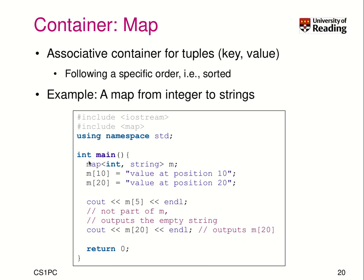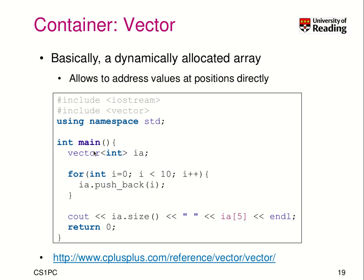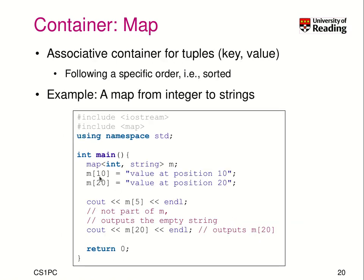Note that this is a sparse type, unlike vector which has all intermediate values filled. In this map, only elements 10 and 20 exist, because those are the only ones I stored. If I try to output the value at position 6, it will output an empty string because it's not part of the map. And I can retrieve the string I stored at position 20 using m[20].